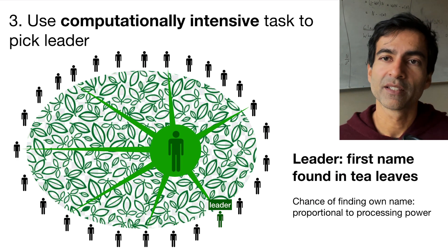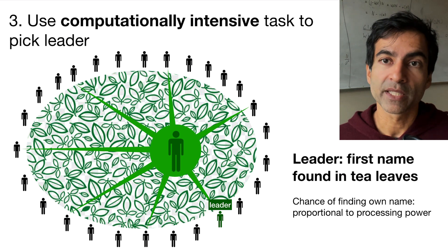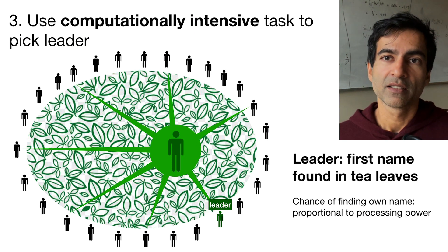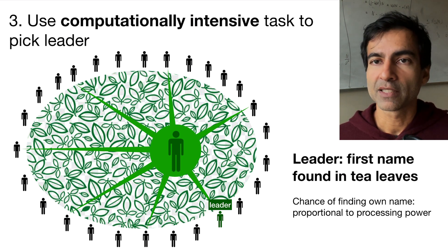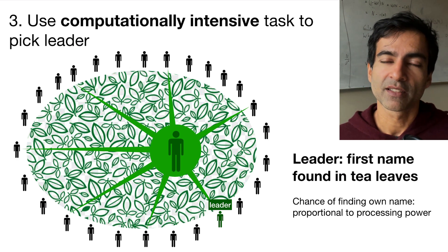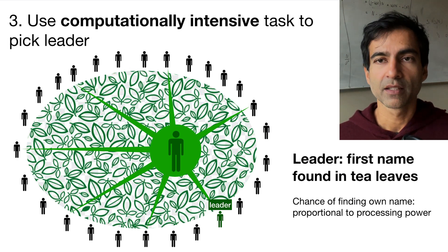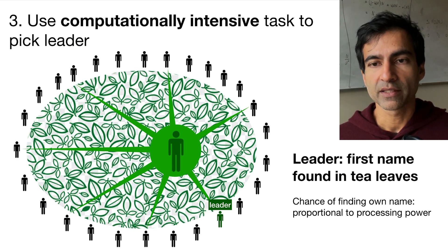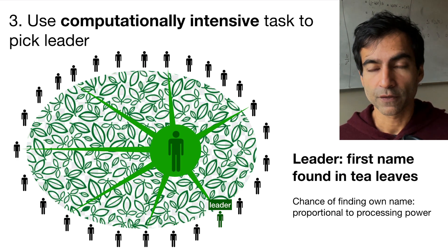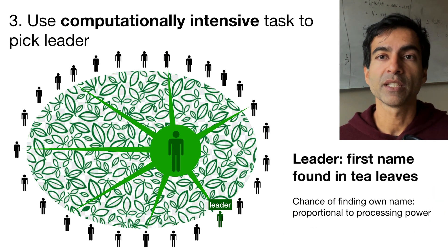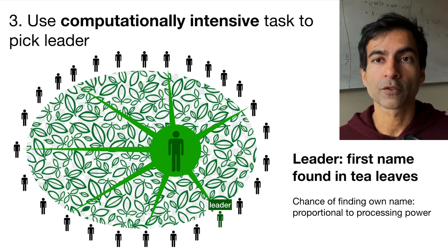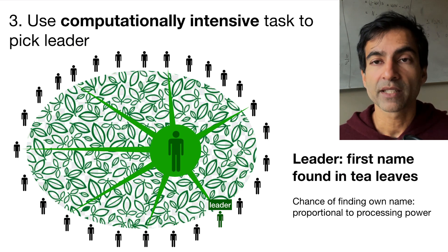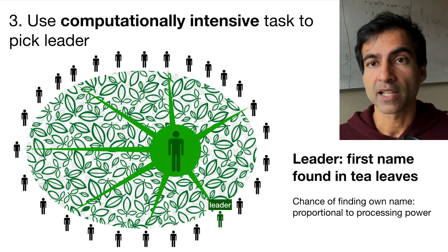Everyone that hears about that decides that this person will be the next leader and transmits the location of the name in the tea leaves to everyone else, so everyone can confirm. Everyone in the network eventually agrees that this person will be the next leader. The first person to find their name in the tea leaves is the one chosen as the leader. The protocol is set up so that the chance of finding your own name is proportional to the amount of computational power you spend to accomplish this task.